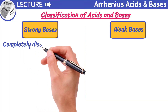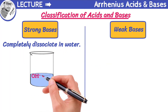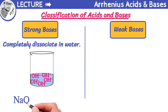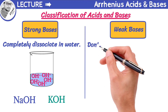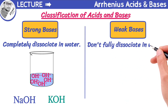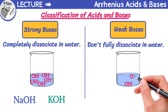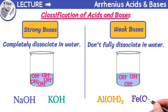Similarly, strong bases completely dissociate in water, meaning they break apart into hydroxide ions, resulting in a high concentration of hydroxide ions. Some examples of strong bases include sodium hydroxide and potassium hydroxide. Weak bases are a bit different from strong bases — they don't fully dissociate in water, meaning they only release a small fraction of their hydroxide ions. Some examples of weak bases include aluminium hydroxide and ferric hydroxide.